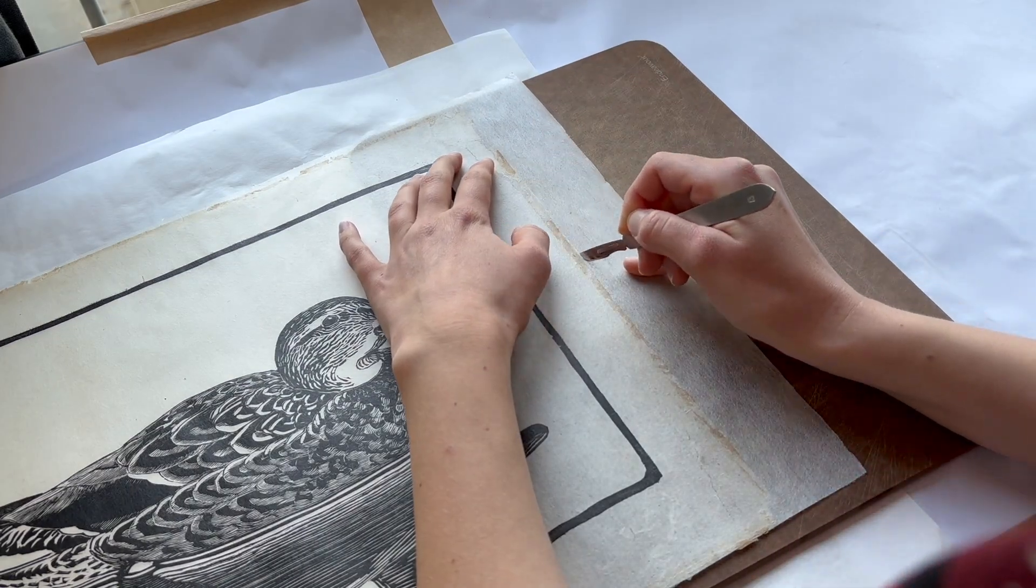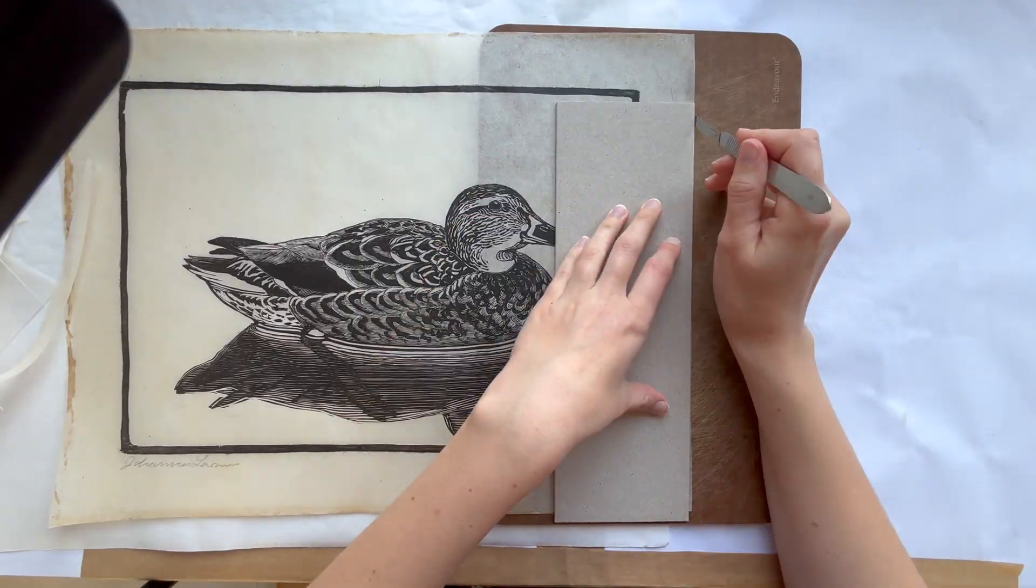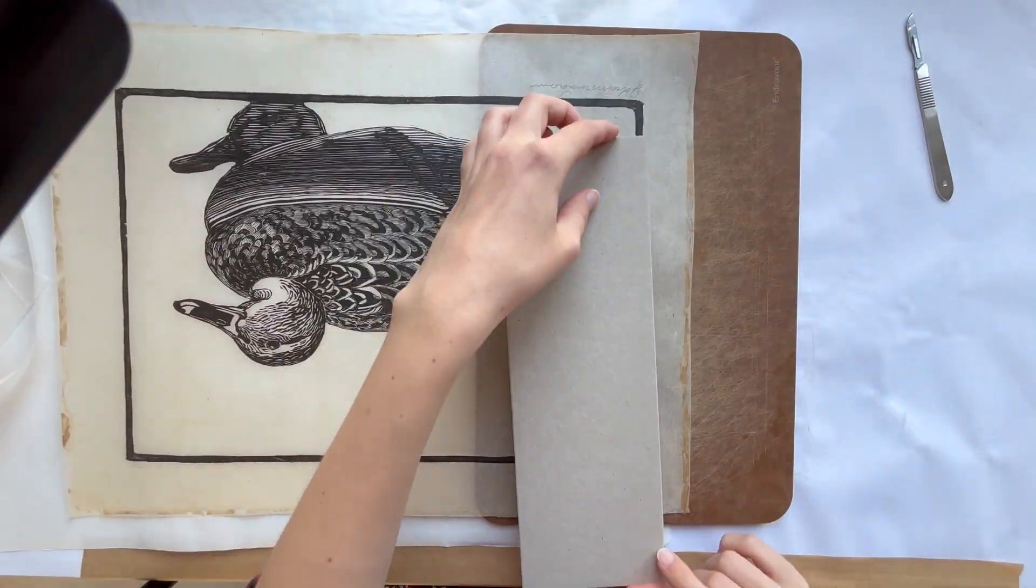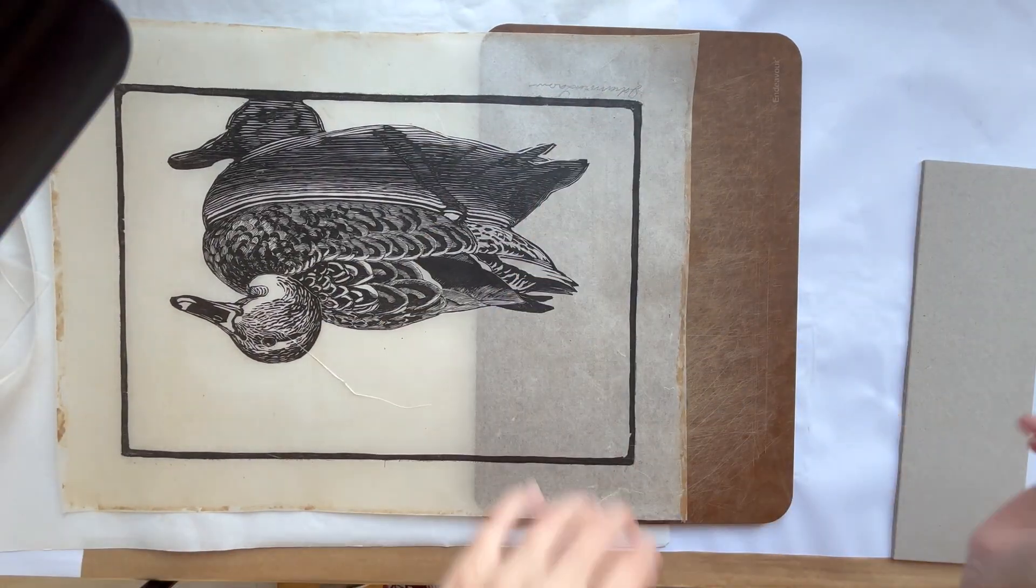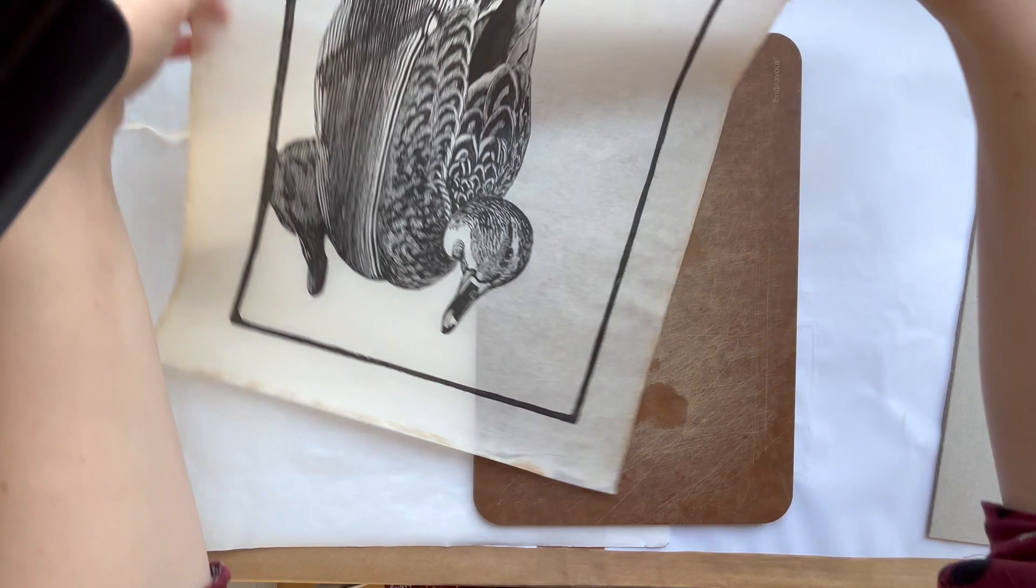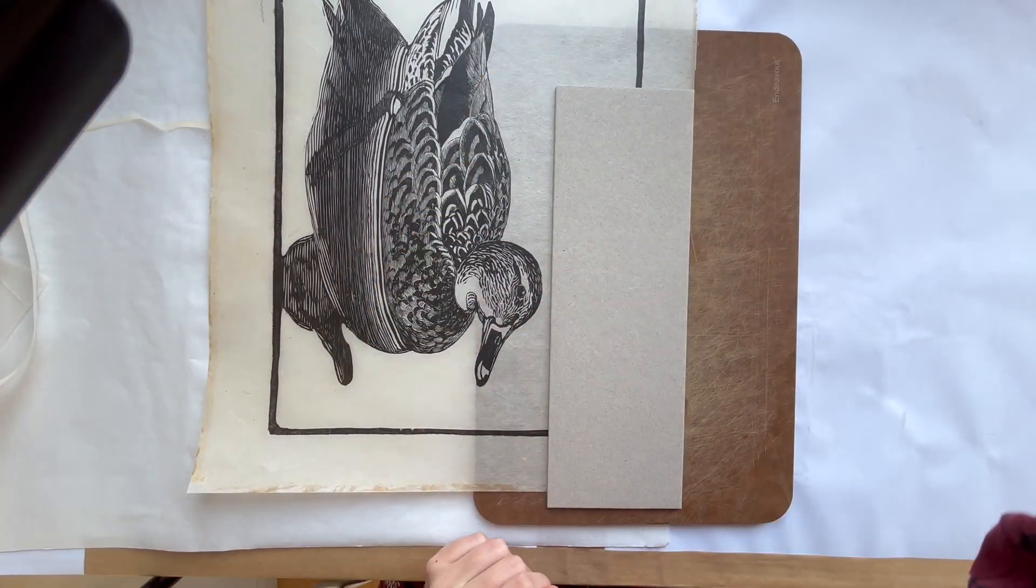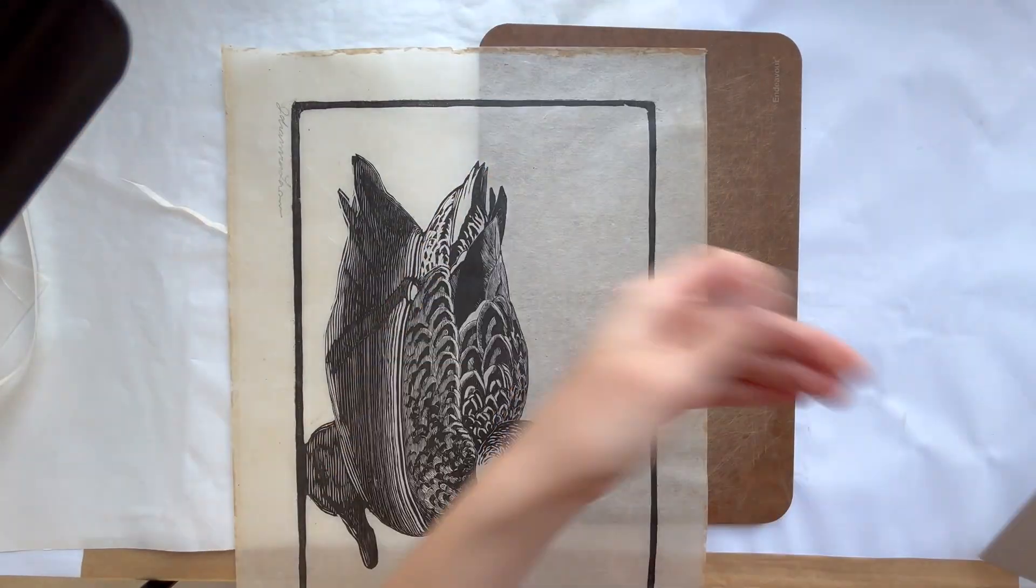When the object is completely dry and removed from both the glass plate and the polyester, the lining material needs to be trimmed to fit the object. This is simply done with a sharp scalpel and a straight edge as a guide.